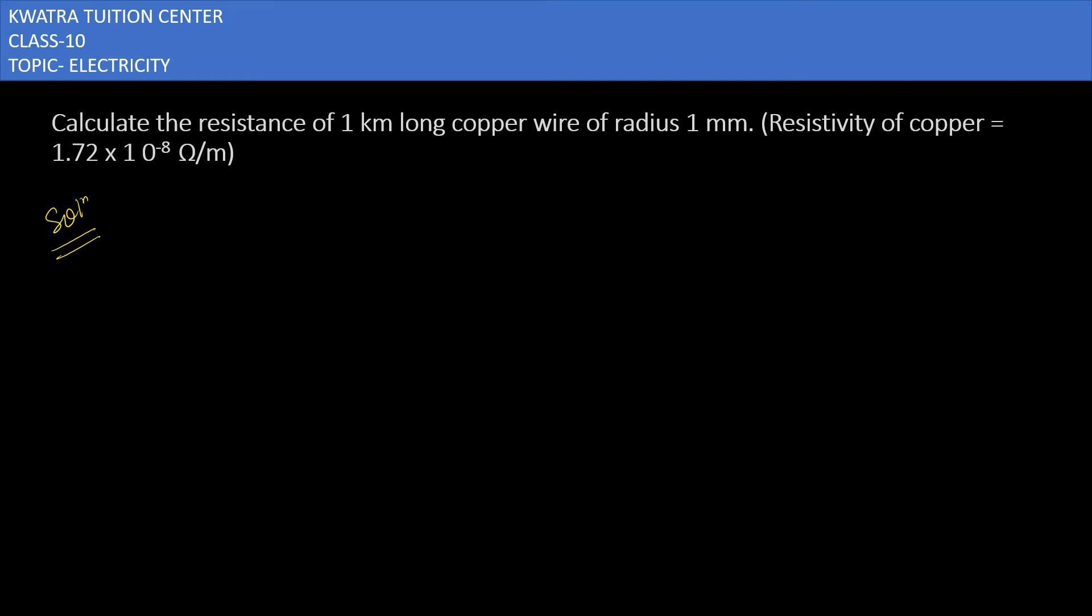Let's start with the third question. It says calculate the resistance of 1 km long copper wire of radius 1 mm. Resistivity of copper is this much.